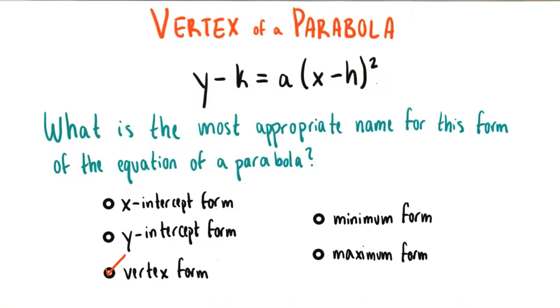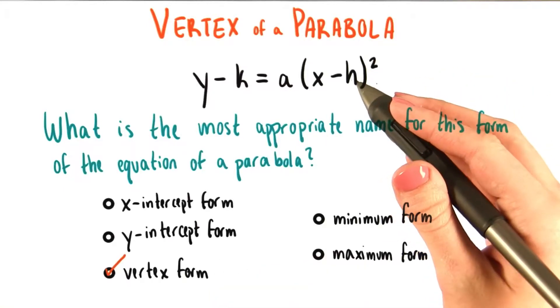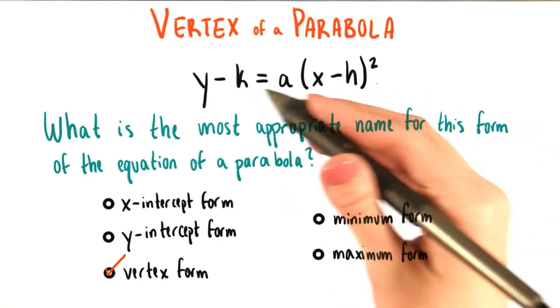I think this should be called vertex form, since as we've seen, we can just read off the coordinates of the vertex, which is at h, k.